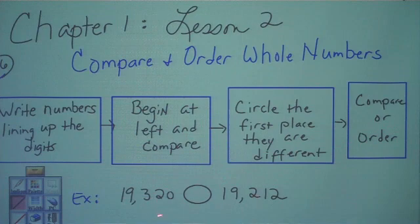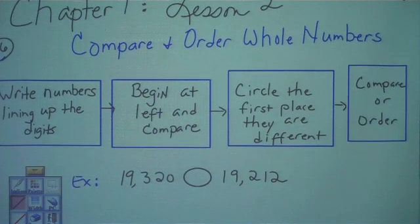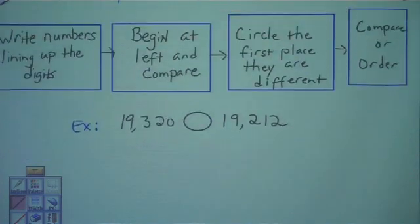Down here I have an example of comparing. We want to know if this number, 19,320, is greater than, less than, or equal to 19,212. Now your child may be able to just look at that and tell, but eventually there are going to be numbers that are confusing. So let's use the steps to prove how easy it is and how well it works.